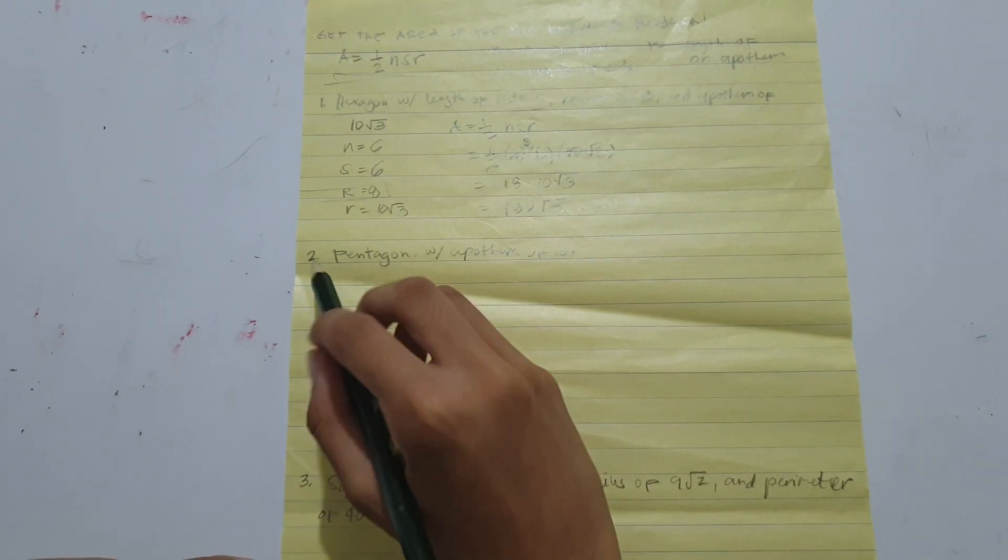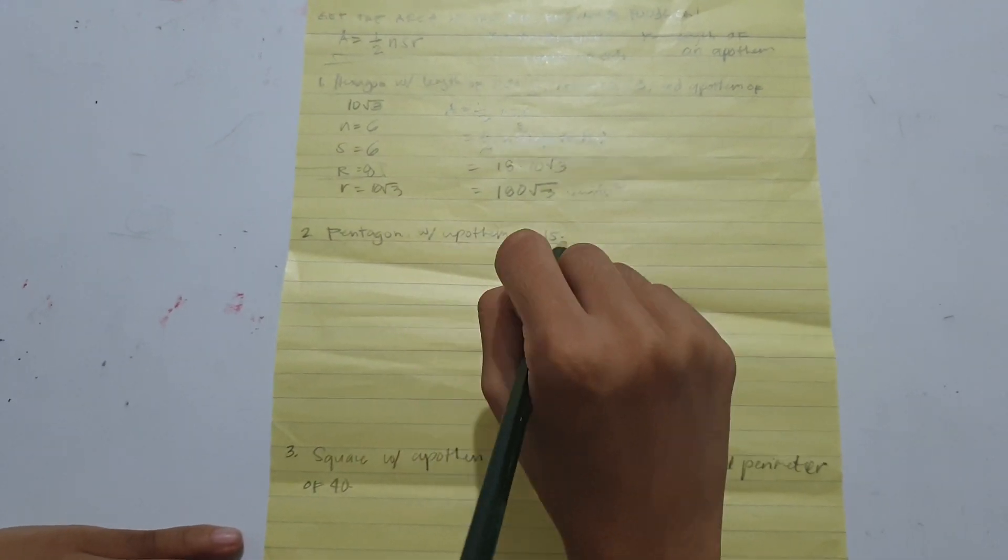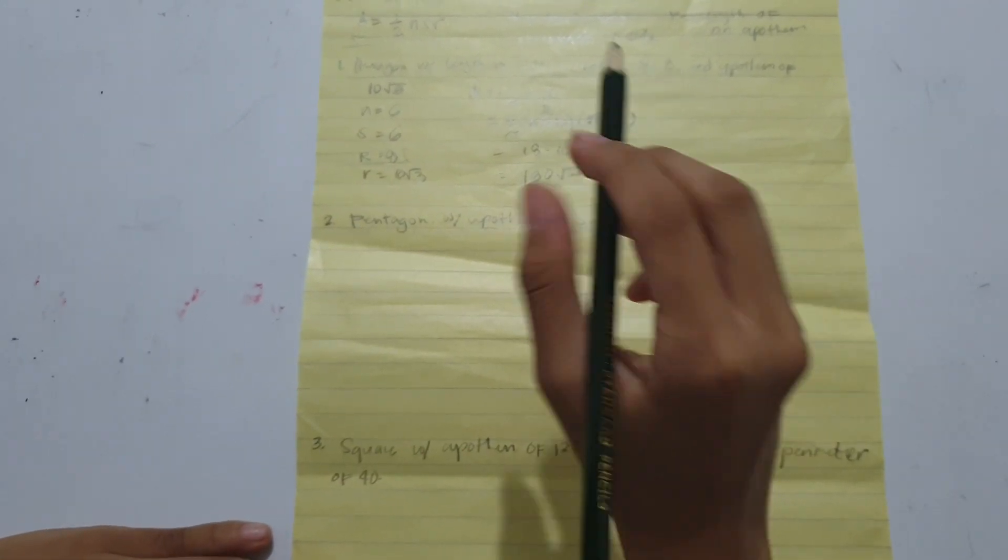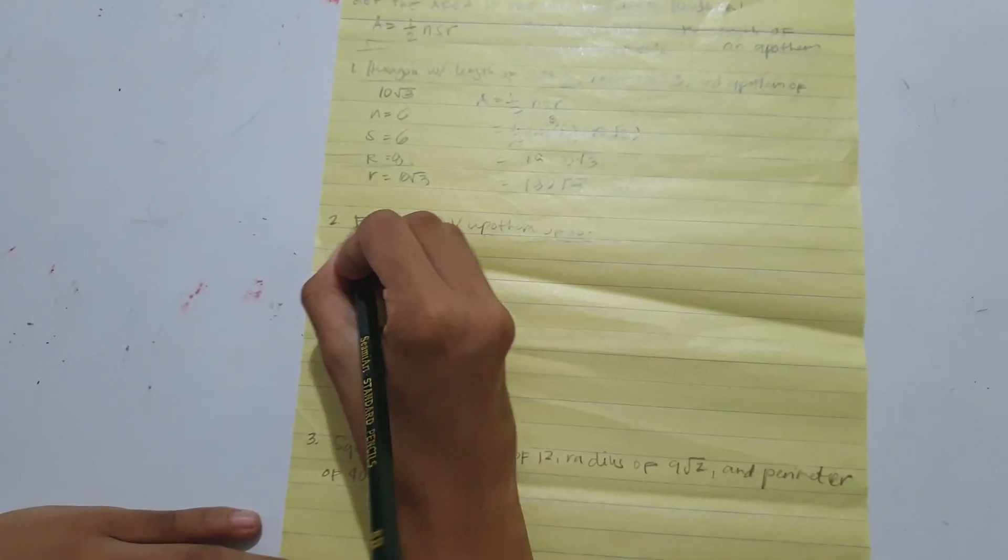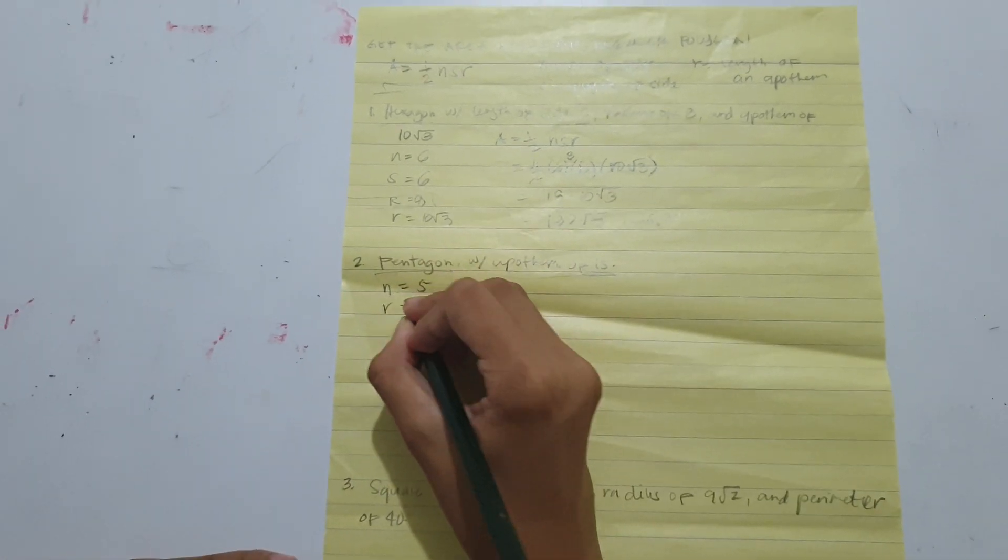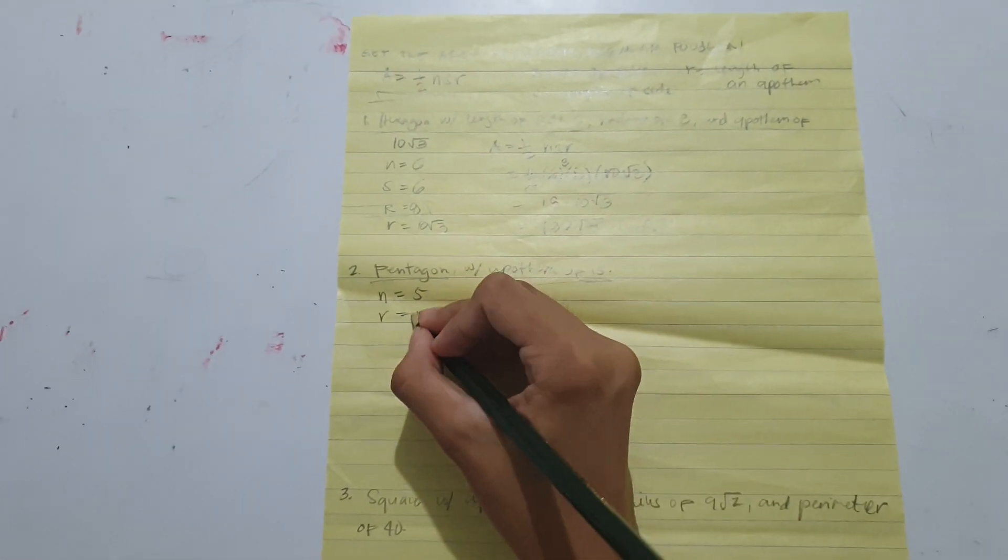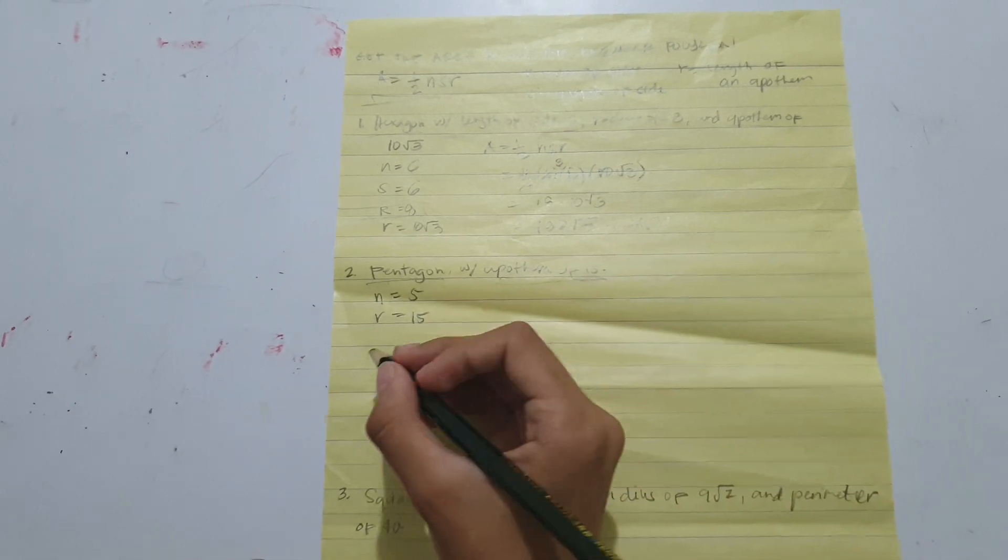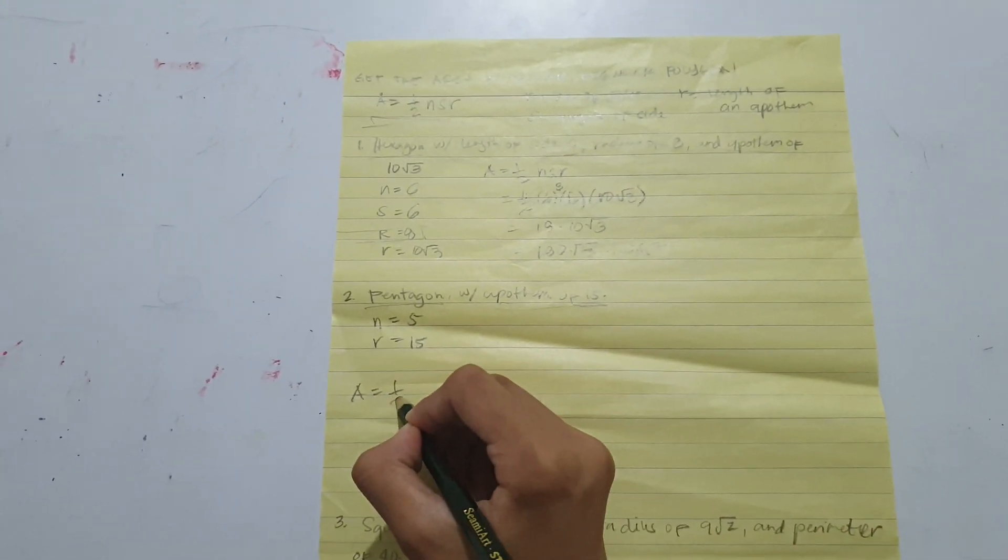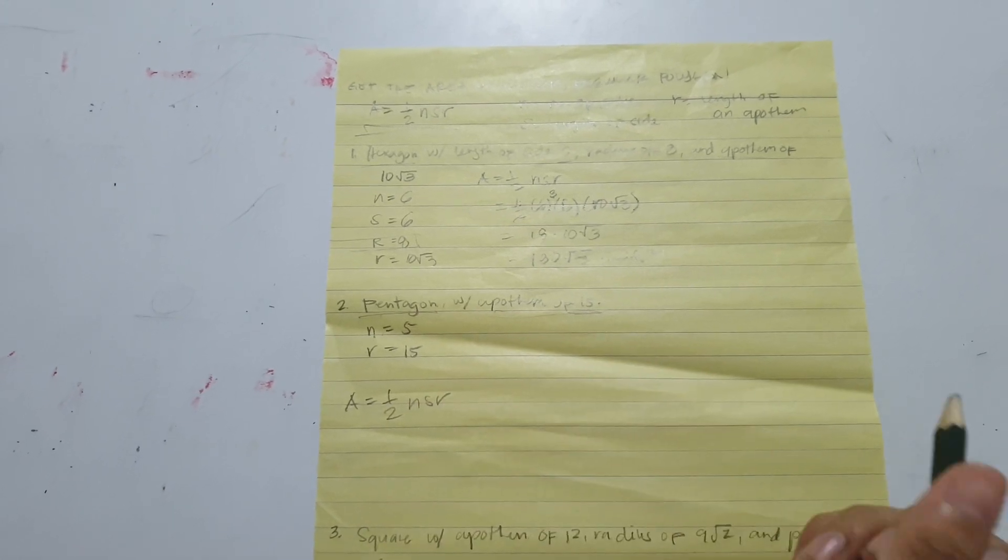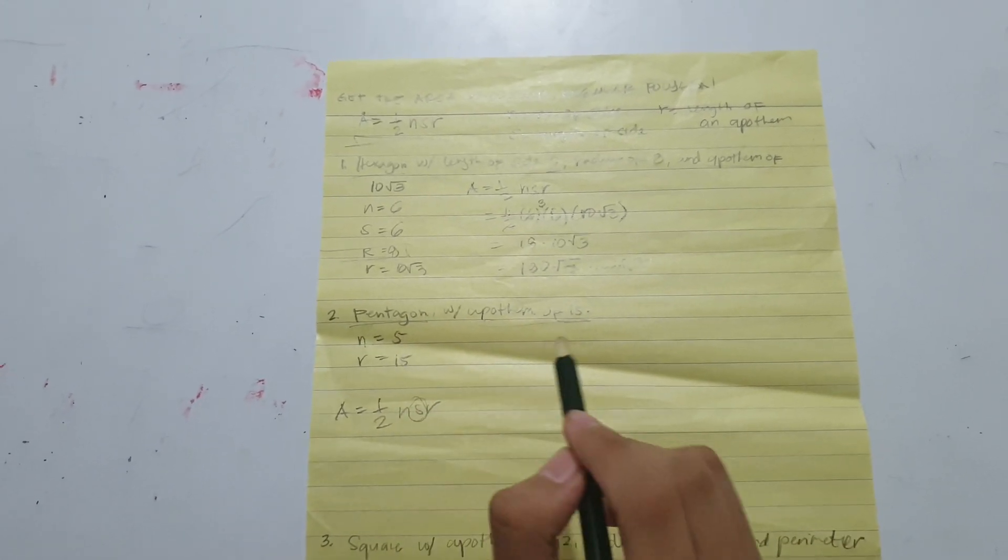Next, pentagon with apothem of fifteen. Distinguish all our variables. N would be five since a pentagon has five sides, and apothem equals fifteen. This shows how we will substitute our formula when one of the variables is missing: S.